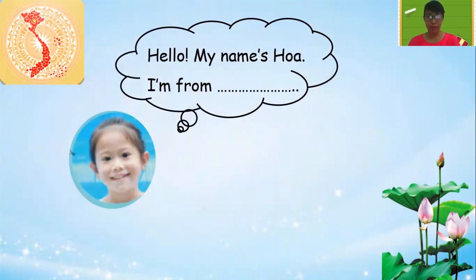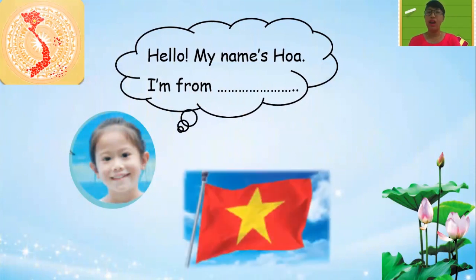Now you look at the girl. This girl is very beautiful. And the girl says: Hello, my name's Hoa. I'm from Vietnam. Now everyone repeat. Hello, my name's Hoa. I'm from Vietnam.